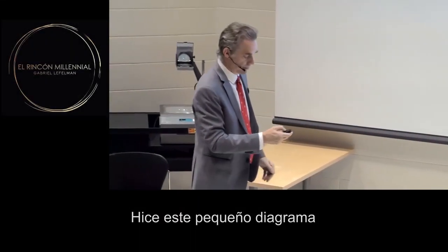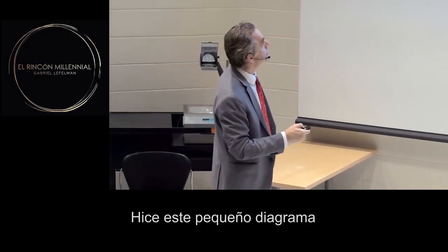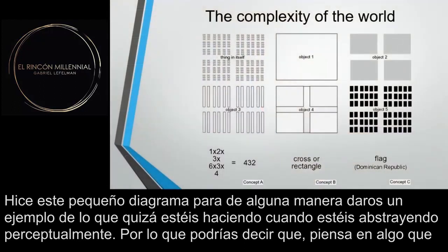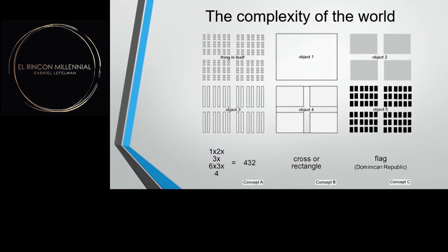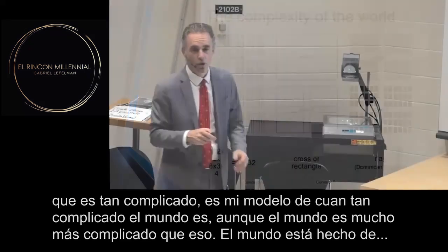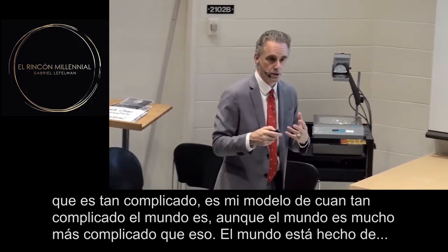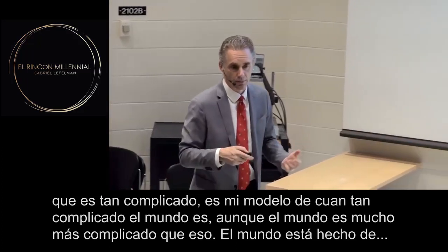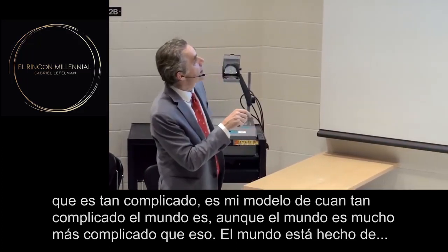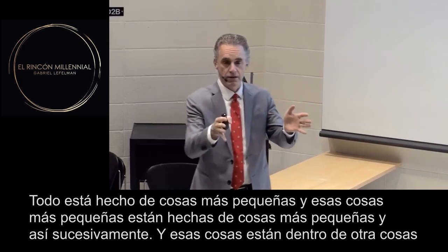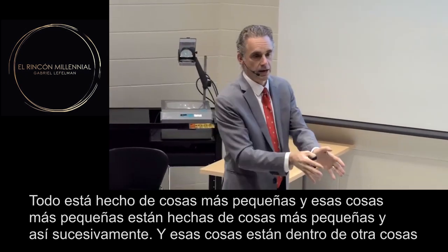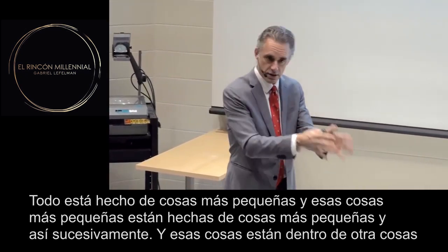I made this little diagram here to kind of give you a sense of what you might be doing when you're abstracting perceptually. Think about something that's that complicated — it's sort of my model of how complex the world is. But the world is made out of everything: littler things, and those littler things are made out of littler things, and so forth.